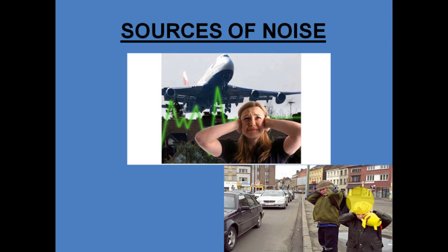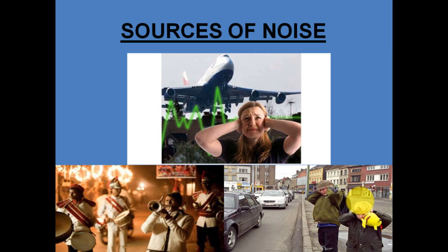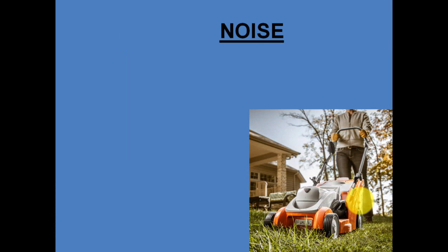Road traffic again produces noise which we don't want. Other sources include marriage bands — you must have seen sometimes right in front of your street a marriage band crossing. So this again is a loud sound and is noise to our ears. A few other examples include lawnmowers. Whenever somebody is cutting grass using lawnmowers, they produce a loud sound which is not soothing to our ears, so this again becomes noise.